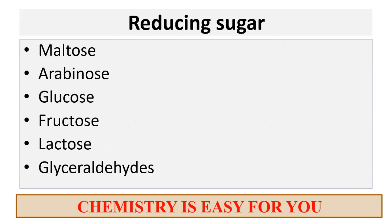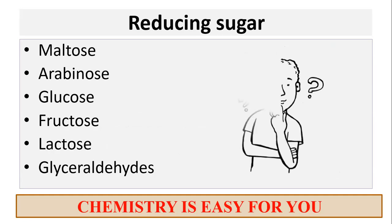These are the names of the reducing sugars: maltose, arabinose, glucose, fructose, lactose and glyceraldehyde. Now we might wonder there are these many names — how to memorize them? We have come up with a hack to memorize these names.